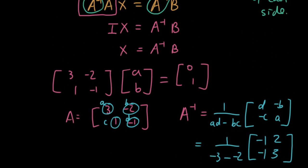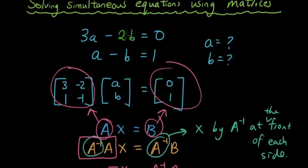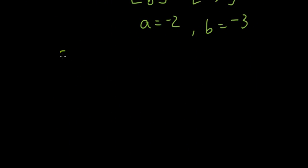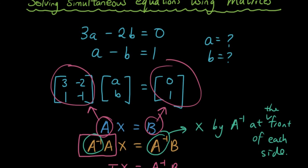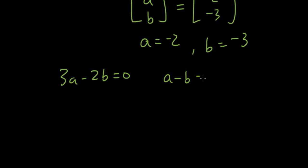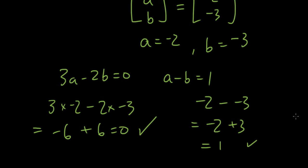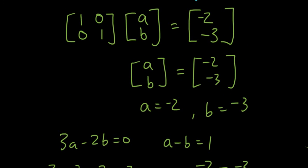Now if you don't believe me, let's try putting it back in the original equation. So let's copy this out. 3A minus 2B equals 0. And what's the other one? A minus B equals 1. Okay, let's test the first one. So 3 times negative 2 minus 2 times negative 3. That equals negative 6 plus 6 which is 0. So yes, it's worked. Now let's try the second test. Negative 2 minus negative 3. That equals negative 2 plus 3 which is equal to 1. So that's the second test. So we have successfully solved this simultaneous equation using matrices.